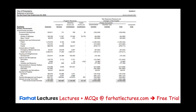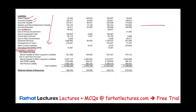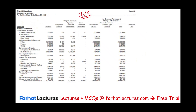We now move from the statement of net position to the statement of activities, which is the equivalent of an income statement. However, it doesn't look like a typical income statement. The statement of activities under government-wide financial statements uses what's called a program approach. It starts with expenses, then shows program revenues, followed by governmental activities and business-type activities columns.